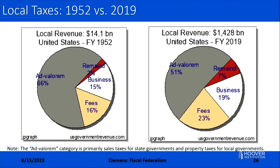Finally, at the local level, governments are even less reliant on progressive tax bases. The income tax exists — New York City has its own income tax — but in the national picture it's just a sliver. The majority of local government revenues come from ad valorem taxes, primarily property taxes used to finance school districts. Local governments also raise substantial revenue through fees — tolls for using roads, fees for public street parking, and similar charges. Local governments have remained quite stable relative to state or federal governments in terms of how things have evolved over the last 70 years.